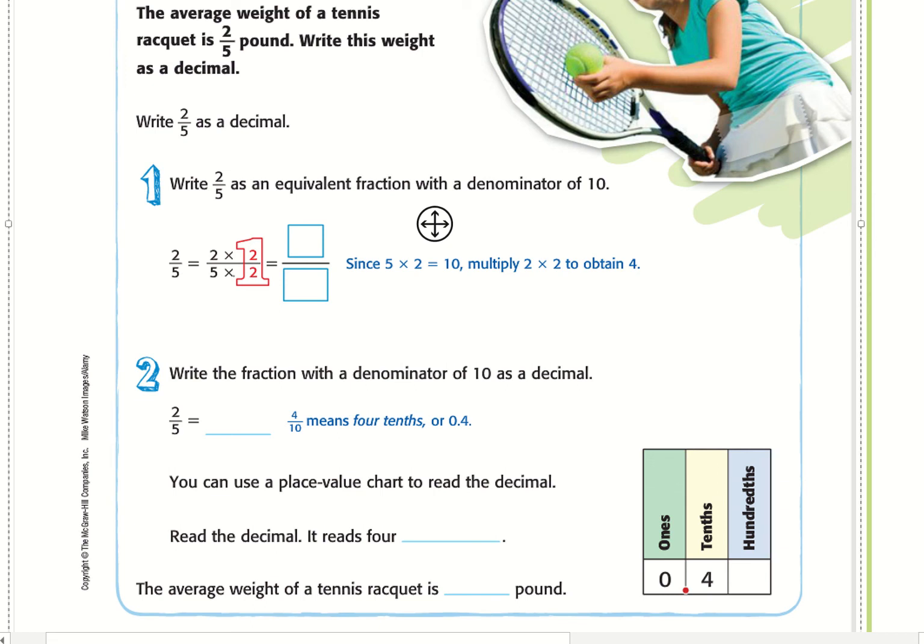So to get the denominator to be 10, I need to do 5 times 2, and whatever I do to the bottom I must do to the top. So 2 times 2 as well. So I have 4 out of 10.